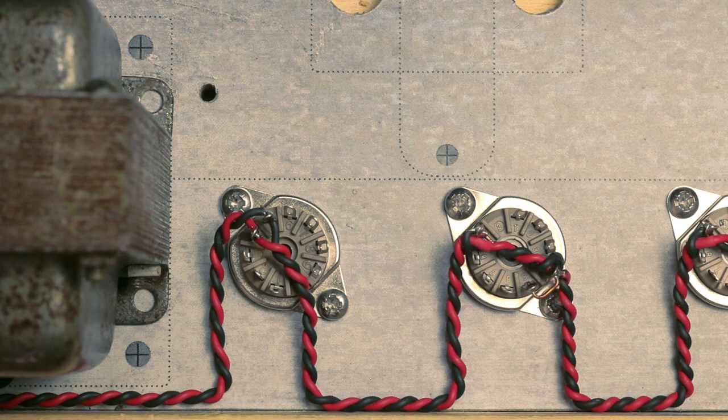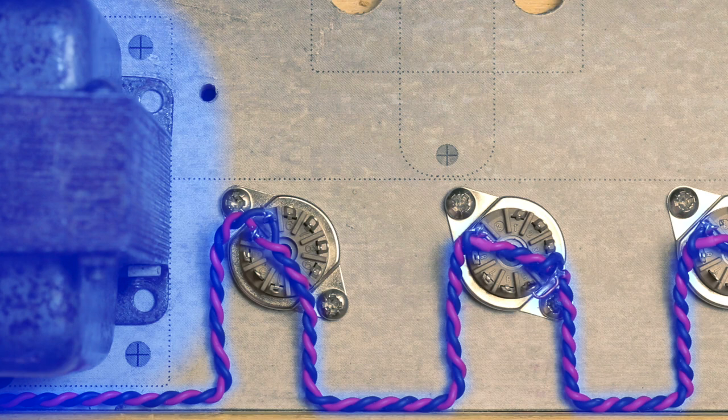Here is another preferred way to wire your twisted filaments and the method that I chose for this build. Again, there is a low magnetic footprint and there are no loops.